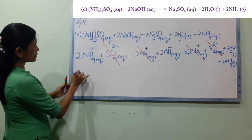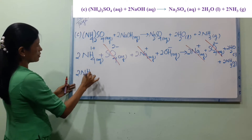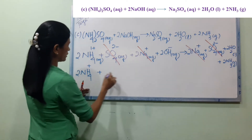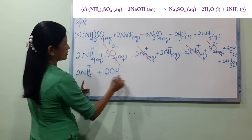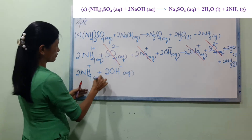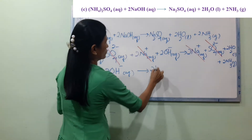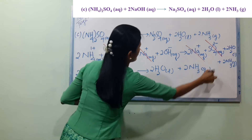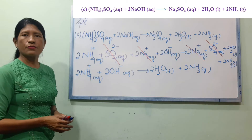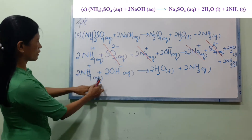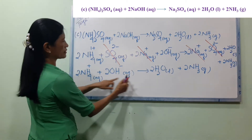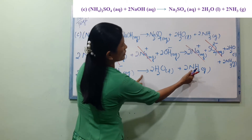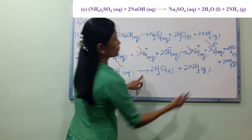Next, the net ionic equation: 2 NH4-plus aqueous plus 2 OH-minus aqueous arrow. And then our equation gives 2 H2O liquid plus 2 NH3 gas. Next equation: 2 NH4-plus aqueous plus 2 OH-minus aqueous arrow 2 H2O liquid plus 2 NH3 gas.